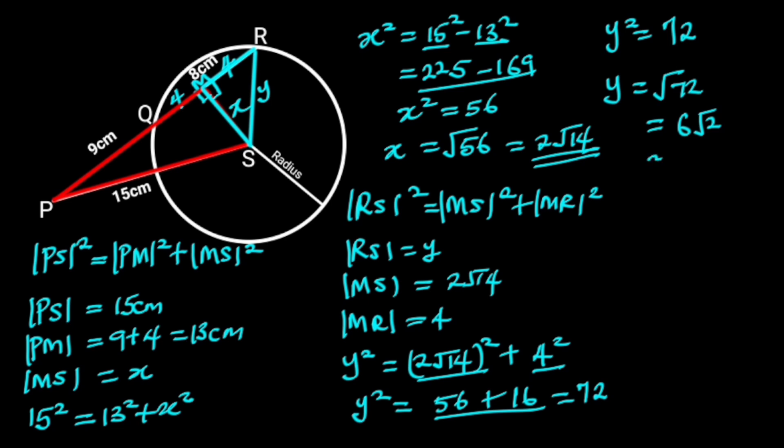And 6 root 2 is approximately 8.49. Hence, the radius of the circle is approximately 8.49 centimeters.